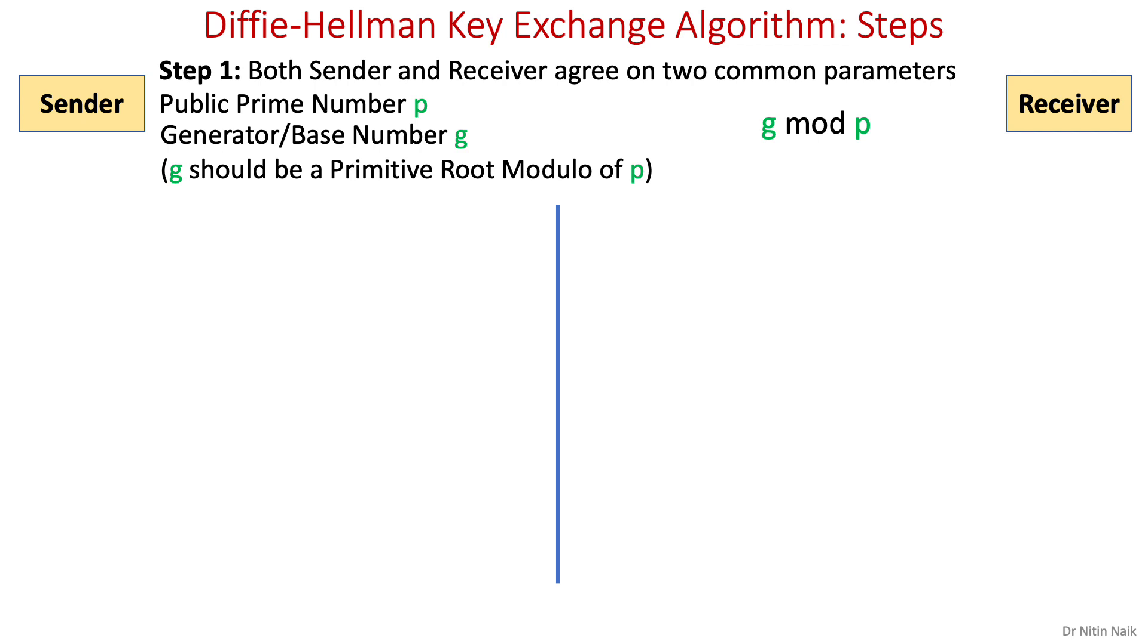These two numbers are used to derive the Diffie-Hellman formula g mod p for computing a public prime number later. In practice, the public prime number or modulus p is a very large prime number while the base g is relatively small to simplify the calculation.